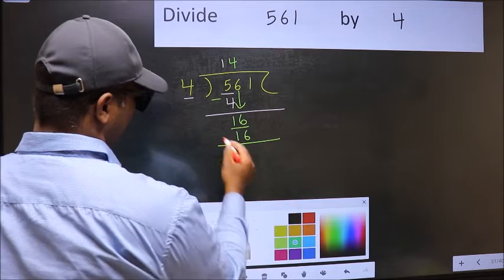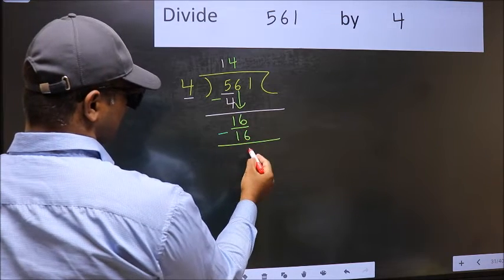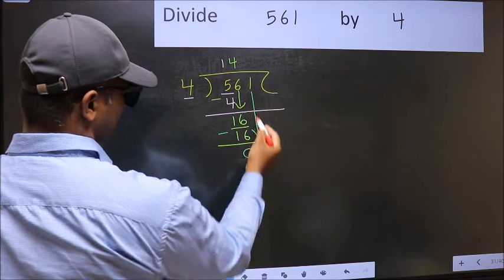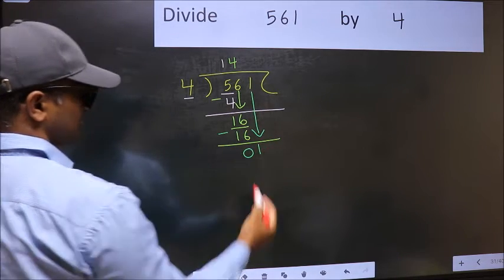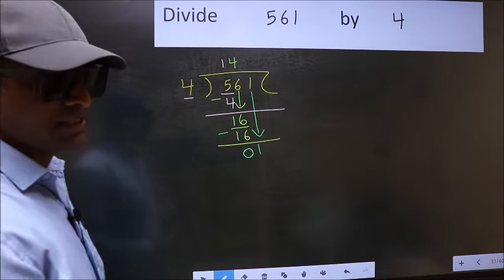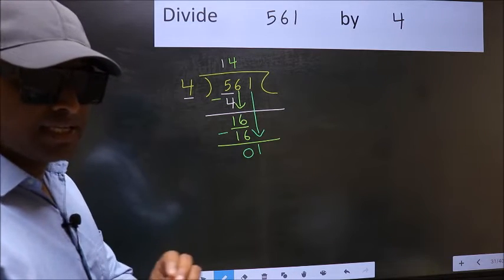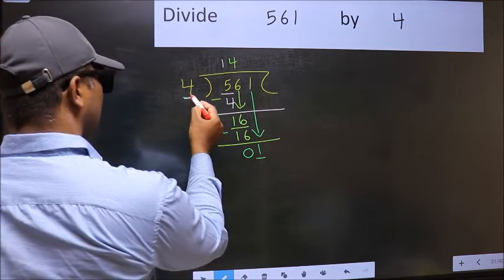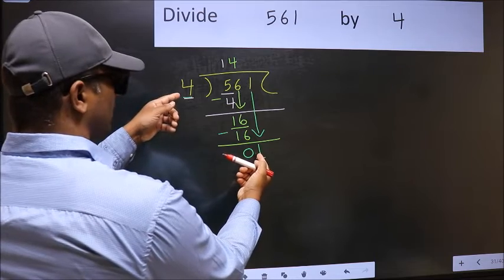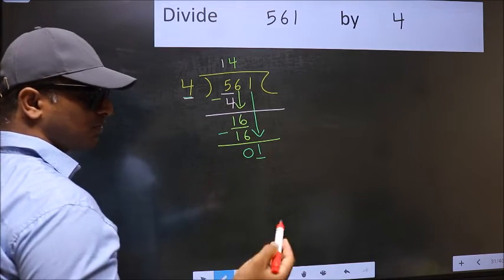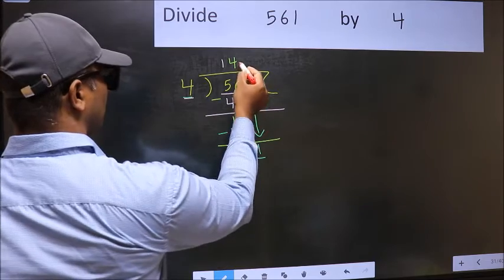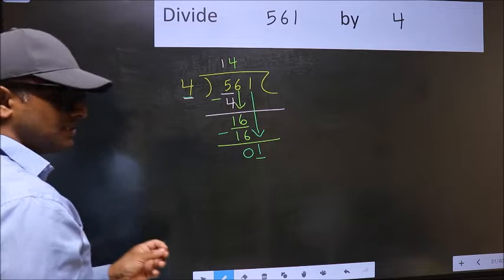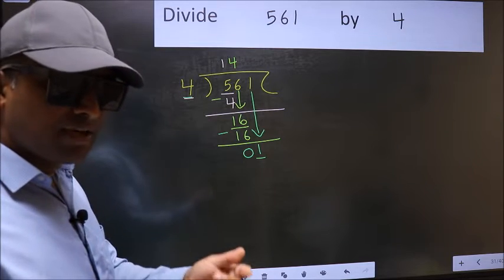Now you should subtract. 16 minus 16, 0. After this, bring down the beside number. So 1 down. After this, the mistake happens. And the mistake is this: Here we have 1 and here 4. 1 is smaller than 4. So what many do is they directly put a dot and take 0, which is wrong.